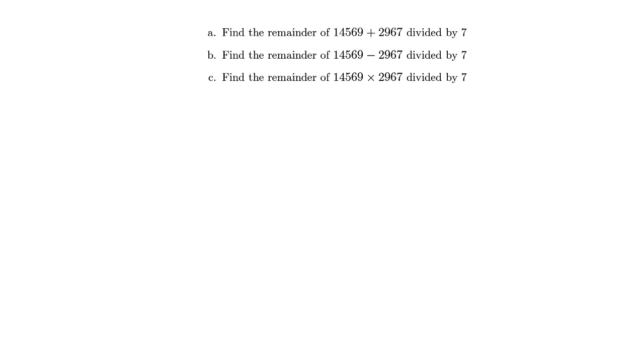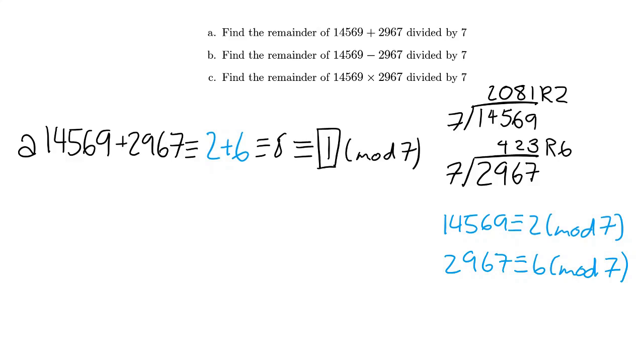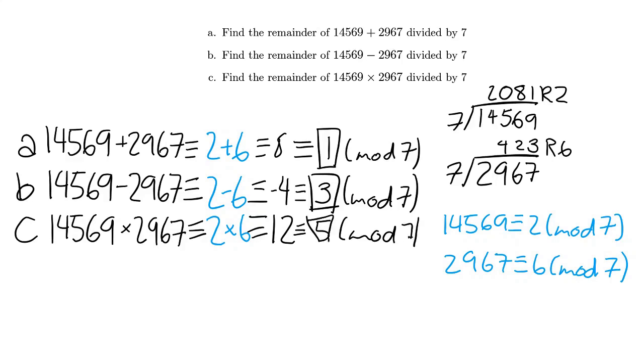What modular arithmetic lets you do is replace numbers involved in addition, subtraction, or multiplication, with any number they're congruent to. So in this example, after finding the remainders of the numbers mod 7, which are 2 and 6 for 14569 and 2967 respectively, we can substitute them in and still get the right result. So then 14569 + 2967 becomes 2 + 6, which is 8, and congruent to 1 mod 7. So 1 is the answer to part a. Then 14569 - 2967 becomes 2 - 6, which is congruent to -4, and congruent to 3. So 3 is the answer to part b. Finally, 14569 × 2967 becomes 2 × 6, which is 12, and congruent to 5 mod 7. So 5 is the answer to part c.